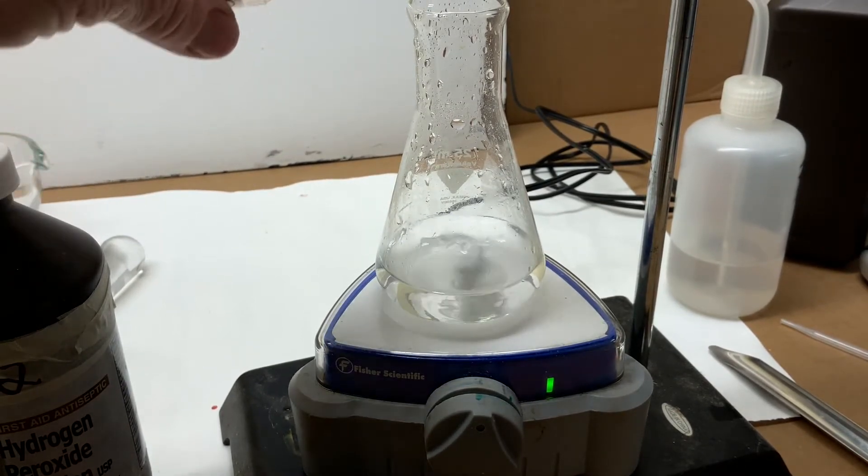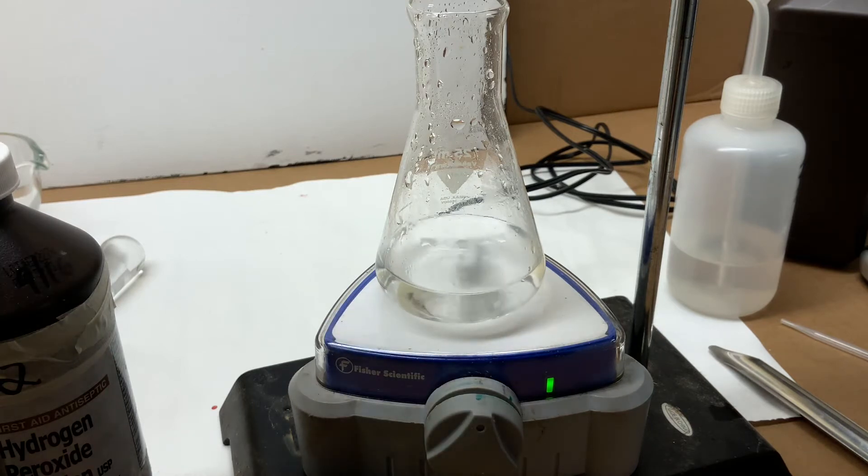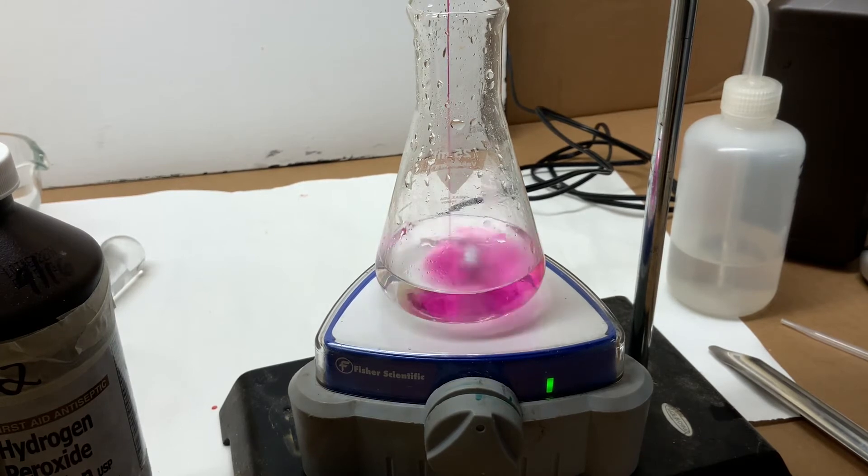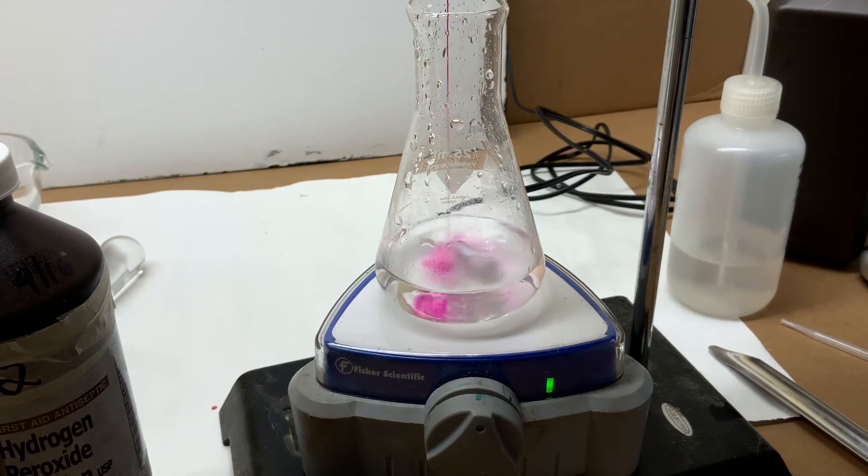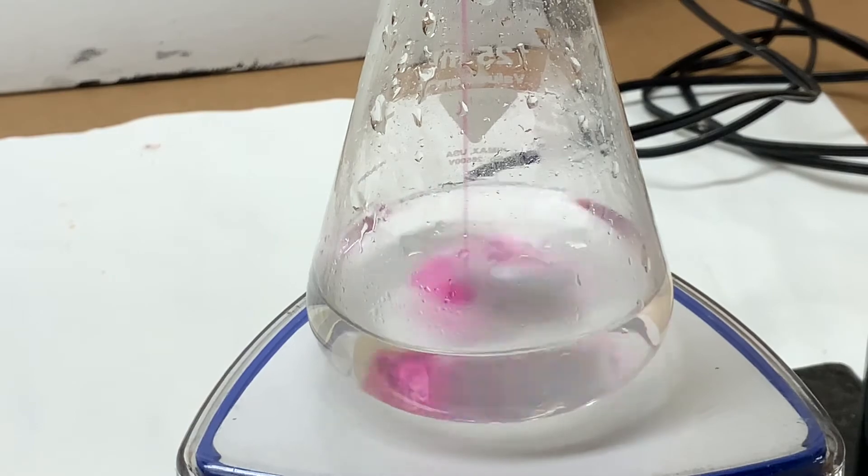You can just see it coming in here. And then we'll start the titration. Reading your procedure, you realize that the pink shows up right away, but don't stop the titration. There is an initial amount of permanganate that must be added for the reaction to actually get started.